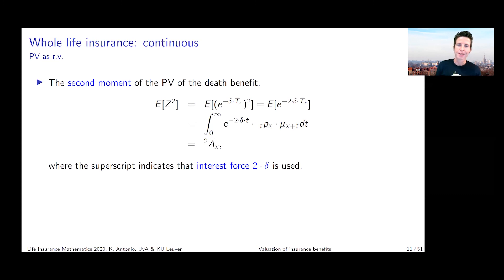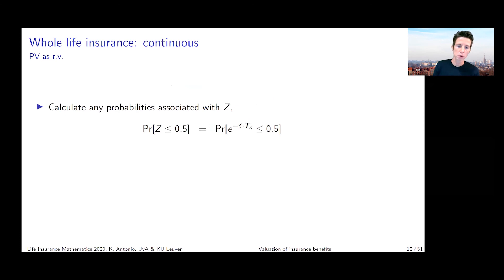If we have first and second moment, we find the variance by doing the second moment minus the first moment squared. This gives us the variance of our present value random variable. Beyond this variance, we can calculate all kinds of probabilities that we want to know about this random variable Z.